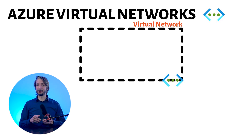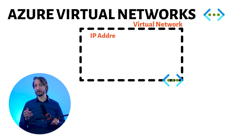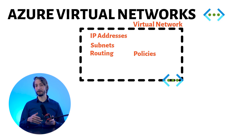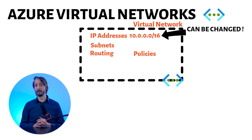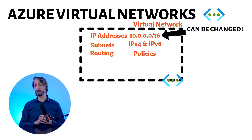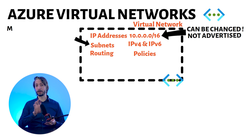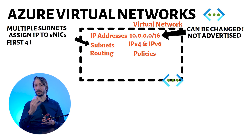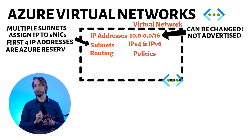As it is a virtual network, you don't need physical gear, but you still have to configure logical entities such as IP addresses, IP subnets, routing, and policies. When you create a virtual network in Azure, it's pre-configured with an IP range of 10.0.0.0/16. This range is not fixed and you can define your own IP range. You can define both IPv4 and IPv6 address ranges. IP ranges defined for the virtual network are not advertised to the internet. You can create multiple subnets from your IP range, and these subnets will be used to assign IP addresses to virtual network interfaces (VNICs). The first four IP addresses of each subnet are reserved and cannot be used for IP allocation.